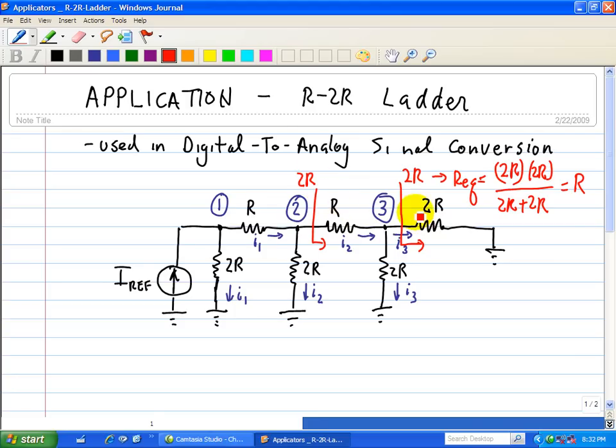However, this 2R now is connected in parallel with this 2R at node 2. So again, we have R equivalent is equal to R.